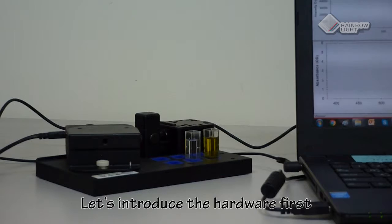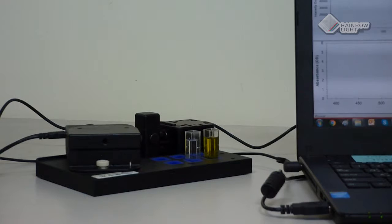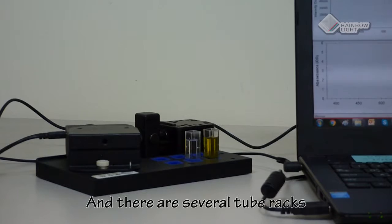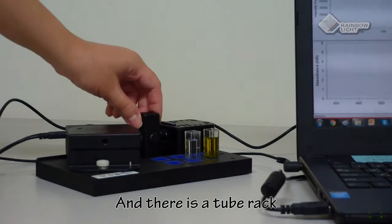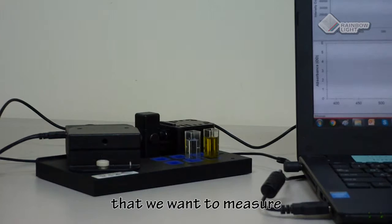Let's introduce the hardware first. This is the light source, which is a halogen lamp inside. And this is our spectrometer, which can measure the spectrum. And there are several tube racks for putting different tubes. And there is a tube rack that's only for putting the object sample that we want to measure.